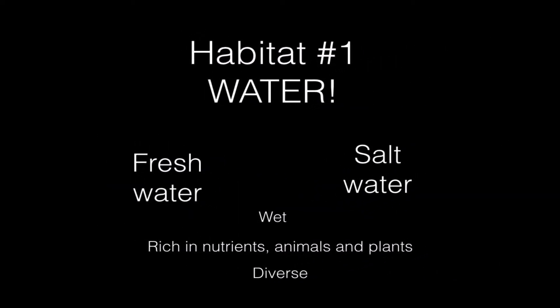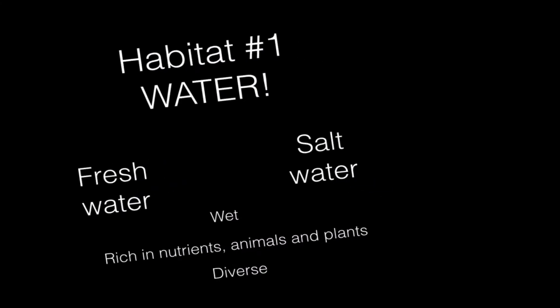Habitat number one — let's talk about water. There are two types of water habitats: fresh water and salt water. Fresh water gets all its water from rain and snow runoff. Salt water is the oceans. Both are very wet, rich in nutrients, and diverse — there are a whole bunch of different plants and animals that live in both regions.